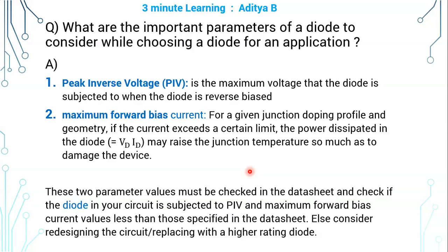If the current through the forward biased diode exceeds that certain limit, then the power dissipated in the diode — which is Vd times Id — may raise the junction temperature so much that it may damage the device.